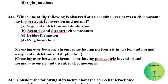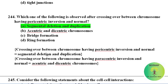Which one of the following is observed after crossing over between a chromosome having pericentric inversion and a normal chromosome? When crossing over occurs between a chromosome with pericentric inversion and a normal chromosome, we observe segmental deletion and duplication. When crossing over occurs between a chromosome with paracentric inversion and a normal chromosome, we observe acentric and dicentric chromosomes.